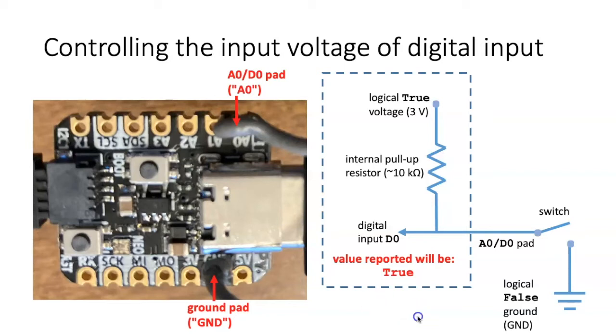On the other hand, if we close the switch, we make a direct connection to the ground. That's going to cause the voltage on this side of the resistor to drop down to zero, and the reported value will be false.